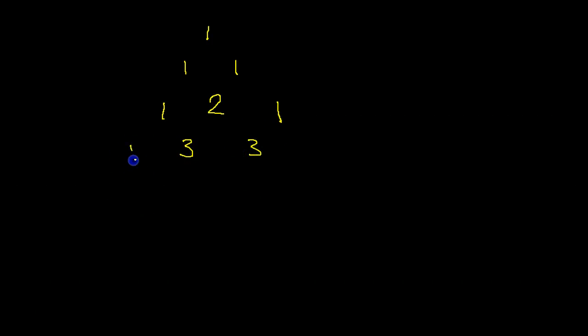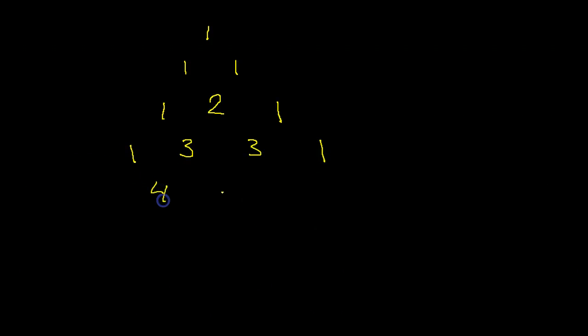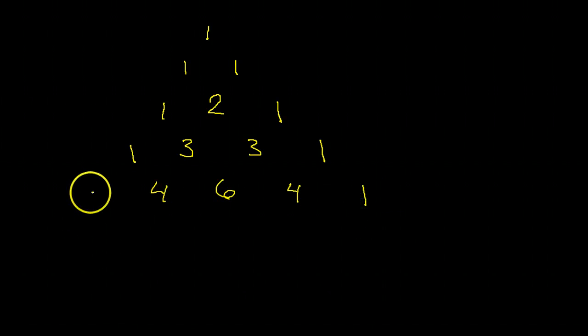After that you start adding. So you take these two numbers, add them together — that makes two — and you put that right down here in the middle. Then you finish off this row with more ones. Always put ones on the end. Then you pick each pair and you add them again. So one and two makes three, two plus one is three again. Finish it off — that's four, six, four — and finish with ones.